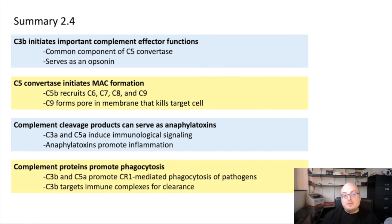Finally, complement proteins promote phagocytosis in their capacity as opsonins. So C3B and C5A work in complex to mediate CR1-mediated phagocytosis of pathogens, and C3B can also target immune complexes for clearance by opsonizing antibodies. So lots of cool things that complement does.